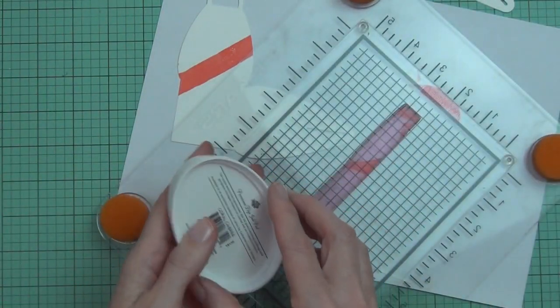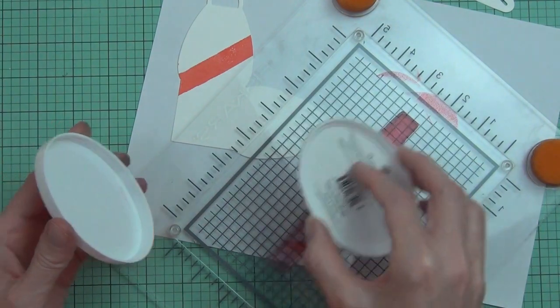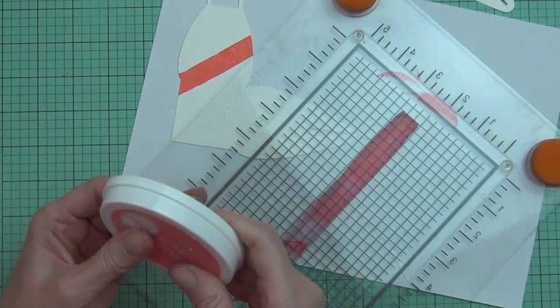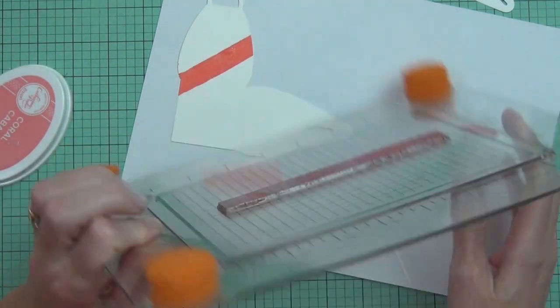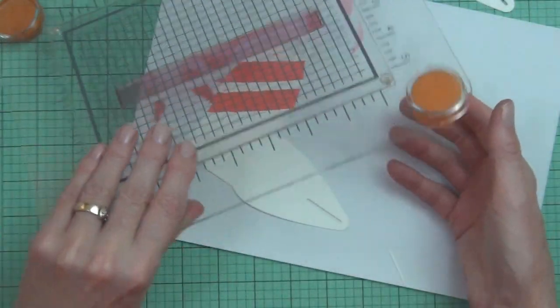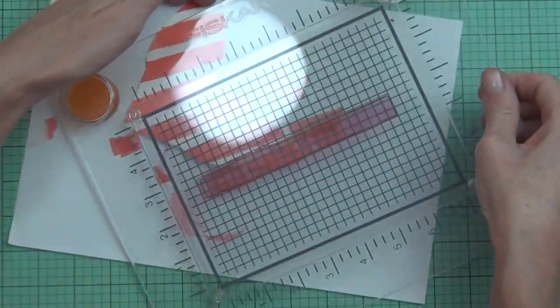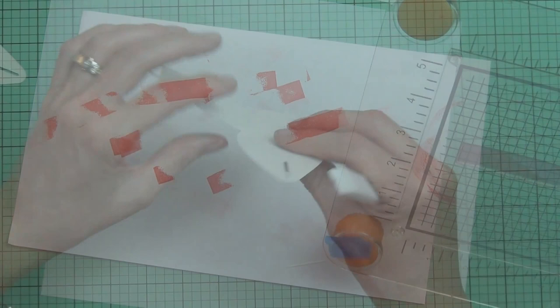I'm using some scrap paper in the background to protect my work surface and eyeballing it. Because these are painted stripes, they're not exact—they have sort of a washy edge—so I just roughly kept the same gap in between each stamp. Once both pieces of cardstock were stamped out, it was time to assemble my little bonbon box.